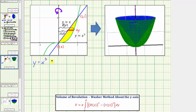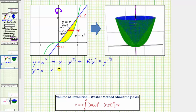If we take the cube root of both sides, or raise both sides of the equation to the one-third power, we get x equals y to the one-third, which means big R(y) equals y to the one-third. For little r(y), it's the horizontal distance from the y-axis to the corresponding point on y equals x. Since y equals x, we can write x equals y, and therefore little r(y) equals y.